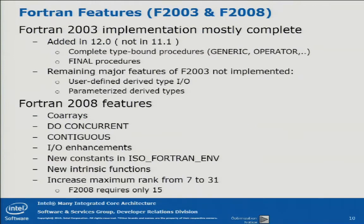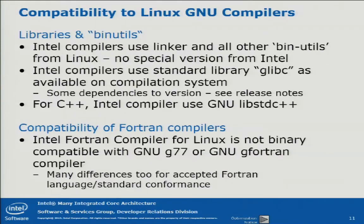So what do we actually support? Almost anything out of Fortran 2003. The only things missing are user-defined derived type IO — basically writing structured types to disk or to files — and Fortran templates, called parameterized derived types, which let you do something like C++ templates in Fortran. For Fortran 2008 we have coarrays, do concurrent loops, contiguous, all the IO enhancements, and some other features. It's basically a good share of what you find in real life, although we are not fully compatible yet.